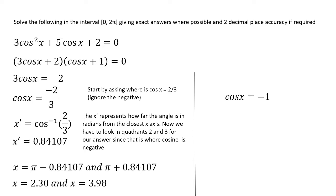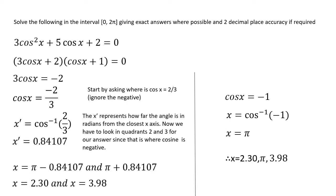On the other side, cosine of x equals minus 1, which is straightforward. The answer is therefore x equals pi. So I have three answers in order of size: 2.3, pi, and 3.98.